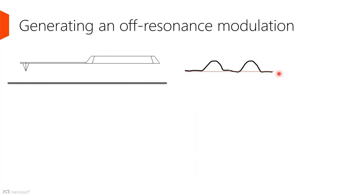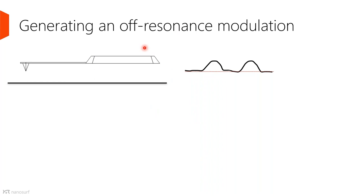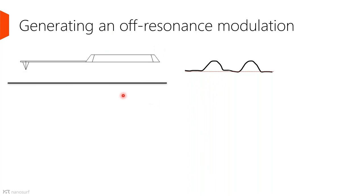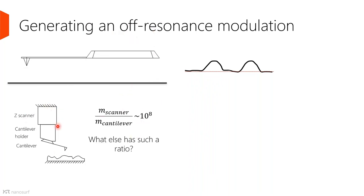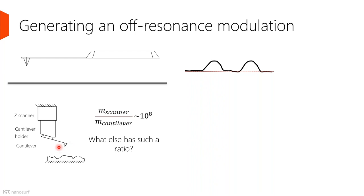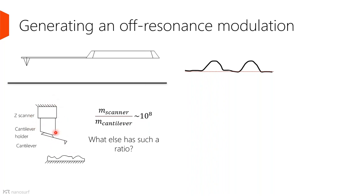To do this motion of the cantilever, we either have to move a significant object behind it — the whole sample — or, in systems with a TIPS scanner, move the entire Z scanner with the cantilever holder and cantilever mounted on it. If I look at the mass ratio of the cantilever itself to this entire object behind it, that's about eight orders of magnitude difference.